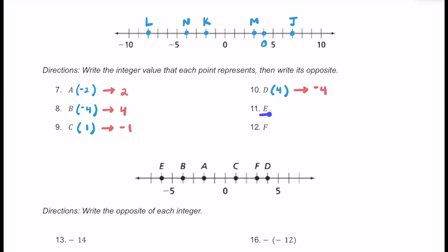For number 11, we have e over here. Counting: negative 1, negative 2, negative 3, negative 4, negative 5, negative 6. So e is going to be at negative 6, and the opposite of negative 6 is going to be positive 6. For number 12, we have f right over here. This is 0, 1, 2, 3. So f is located at positive 3, and the opposite of positive 3 is just going to be negative 3.